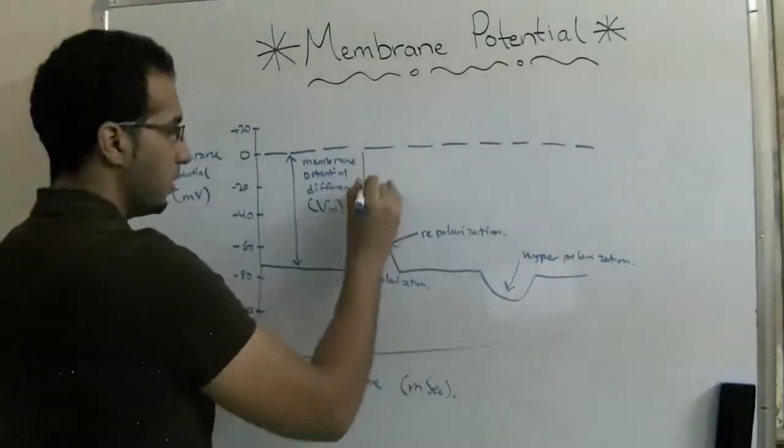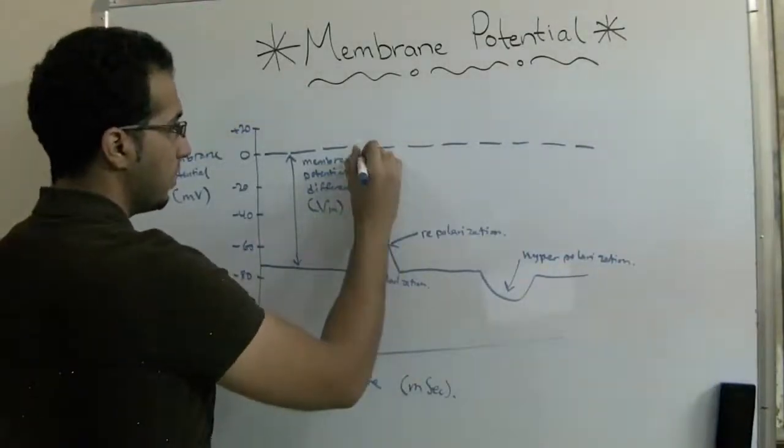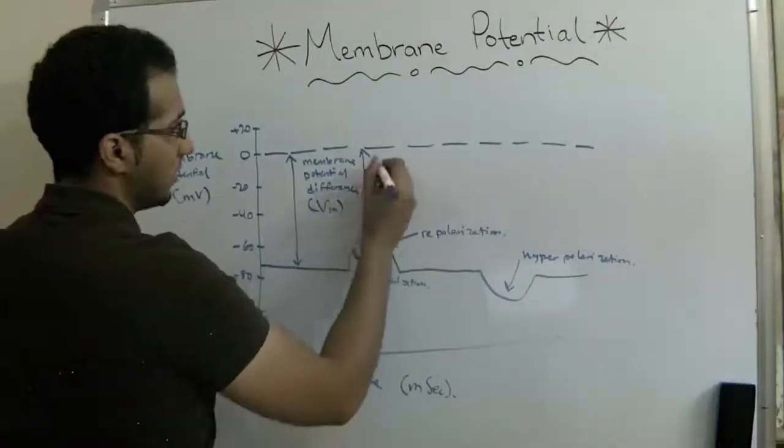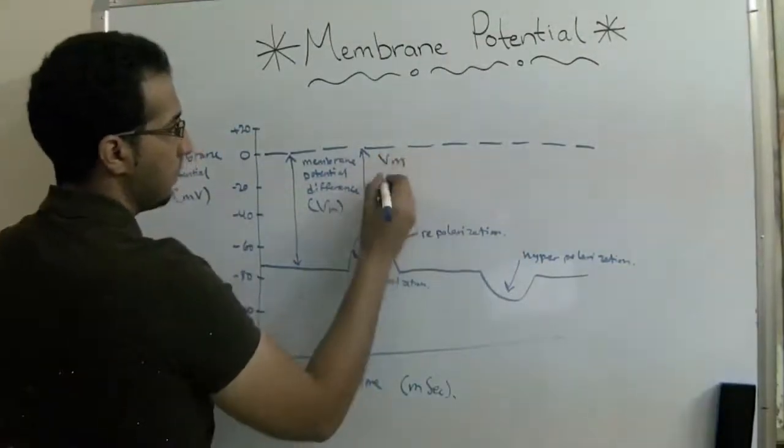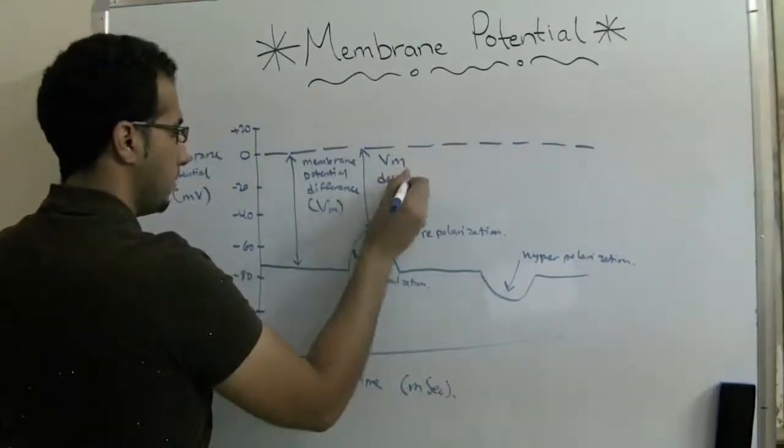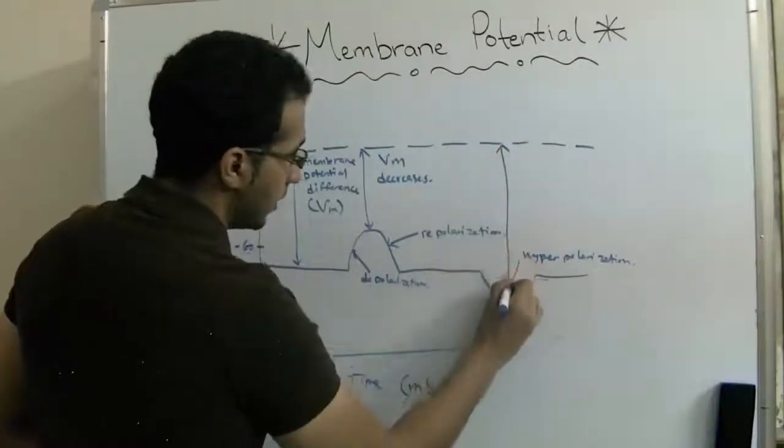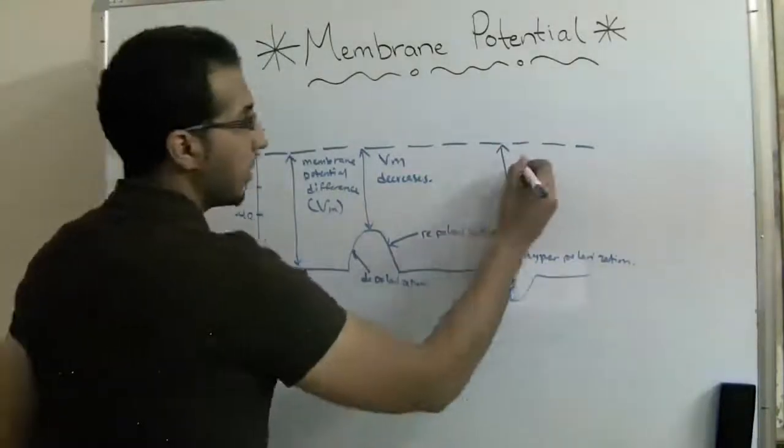In this point over here, the membrane potential difference decreases, and over here as we can see, it's increasing.